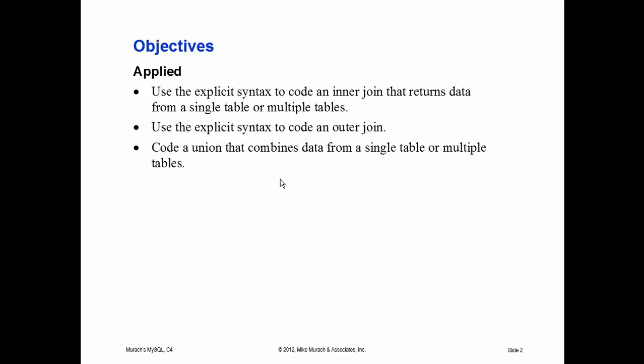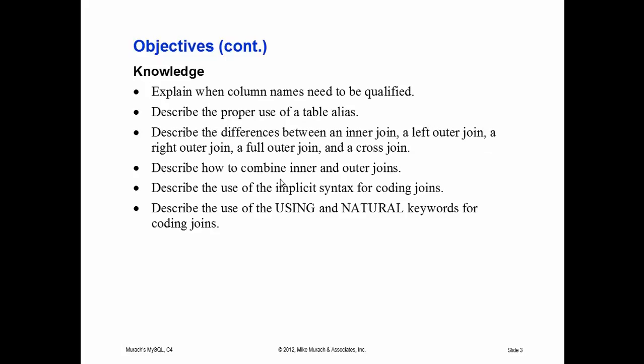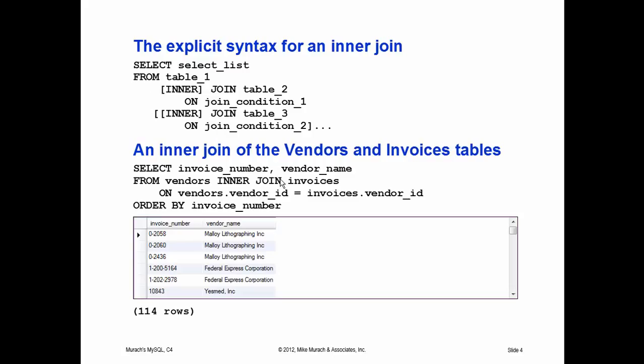After we get done talking about inner joins, we'll talk about outer joins. Then we'll talk a little bit about unions, explain why you have to qualify names at certain times, talk about using aliases, discuss the differences between the different join types, and also discuss using the natural and the USING keywords as well.